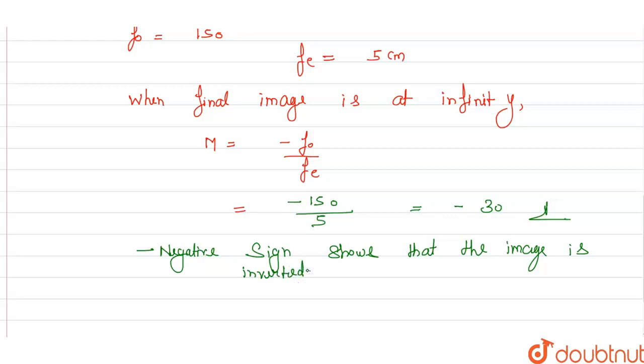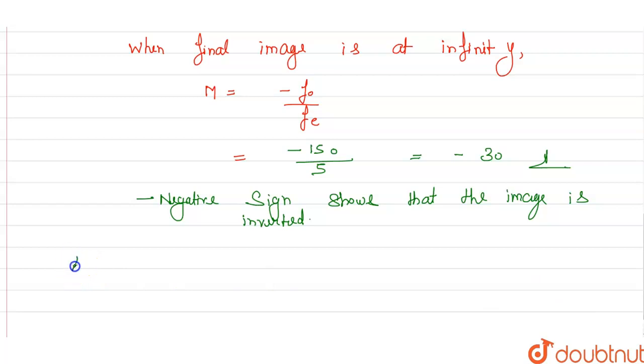Now see, here we are given that the tower has height AB. Let the height of the tower be H, and A' B' is the image formed by the objective.